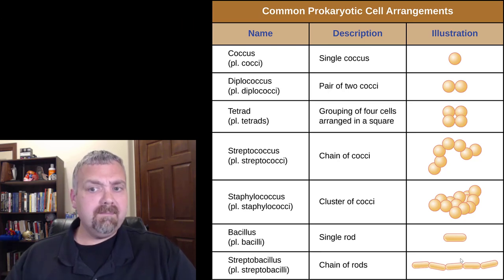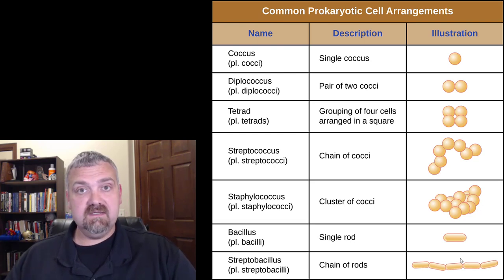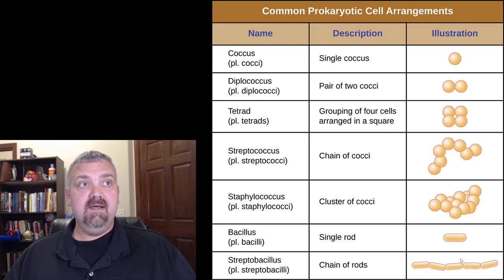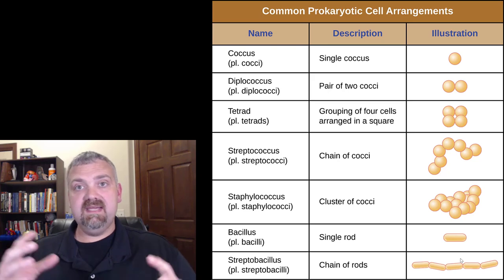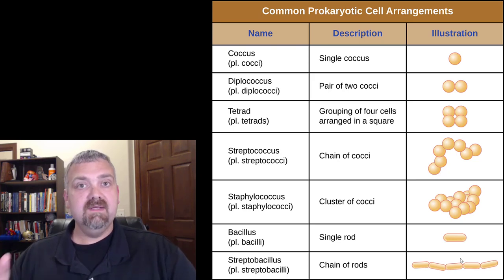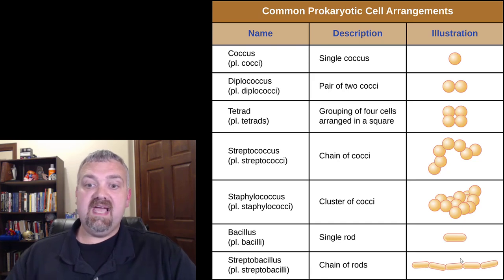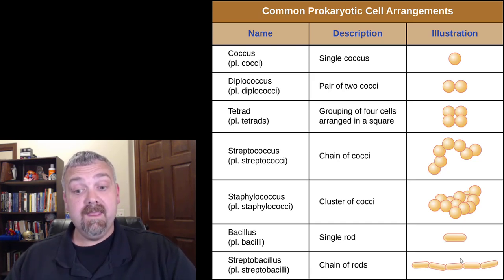But the two key ones here are strepto means chain and staphylo means cluster. So you think strepto and staphylo and then coccus and bacillus. Most of the organisms that we're going to talk about are going to need those terms to describe them. Now notice here, we have a streptococcus and we have a staphylococcus, but we do not have a staphylobacillus.